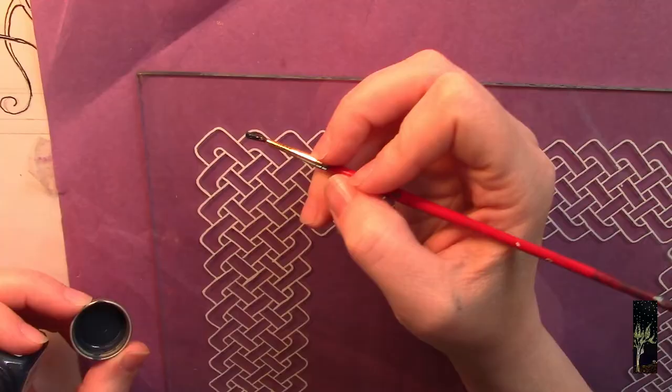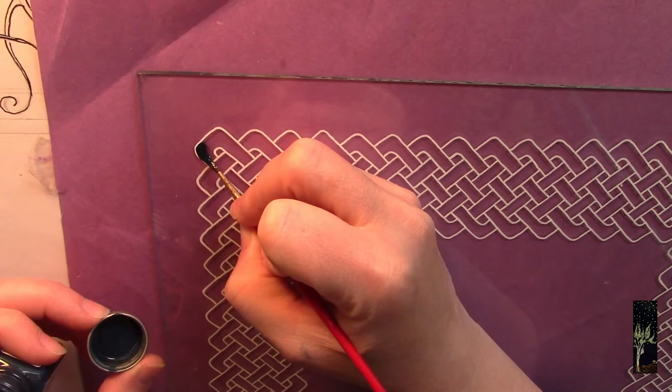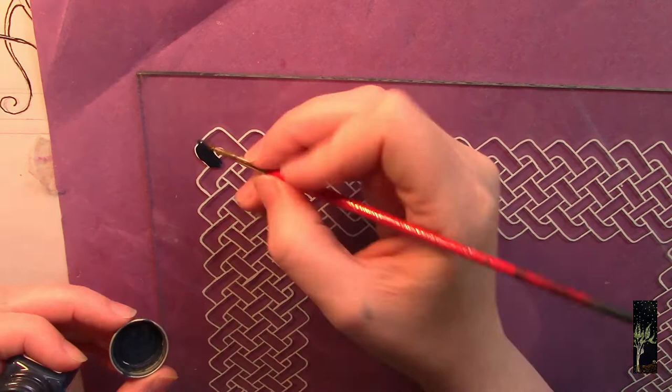So I'm just using the purple so that I can see my lines and I'm gonna start filling in the blue for this layer of the knotwork.